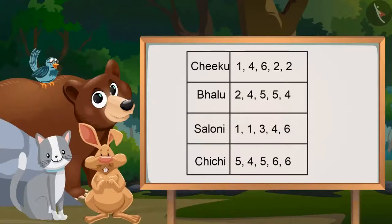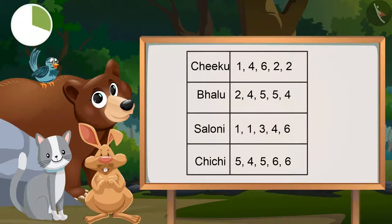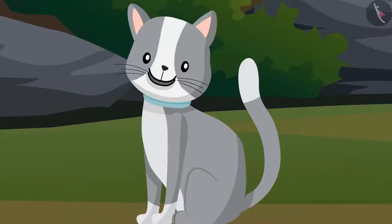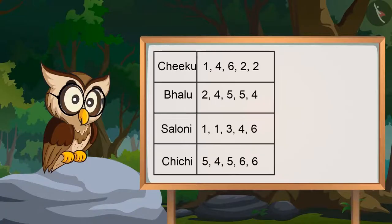But if we closely look at this data, can you tell which number hit the dice most of the times? Because we have to first check how many times each number has hit the dice. And for this, we can arrange and write our data in this way.